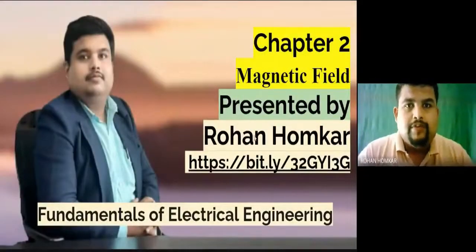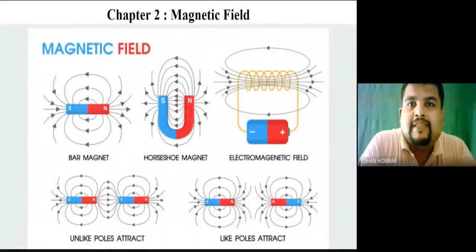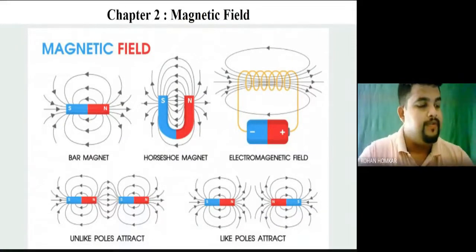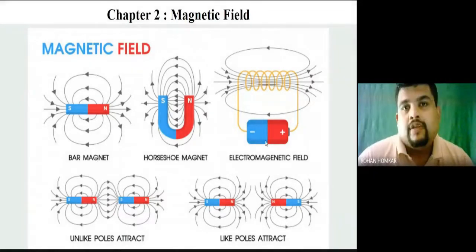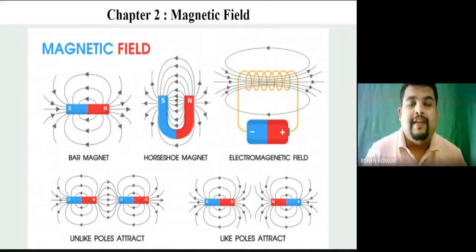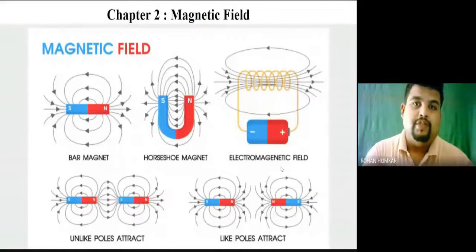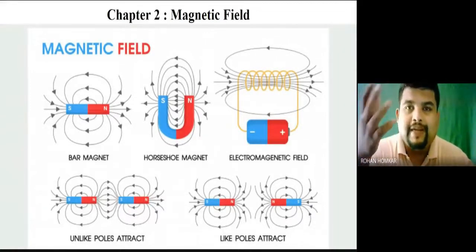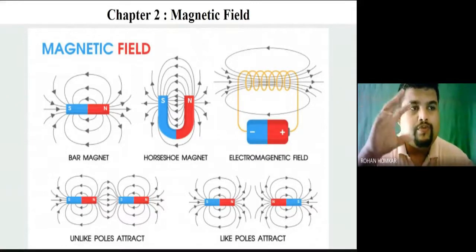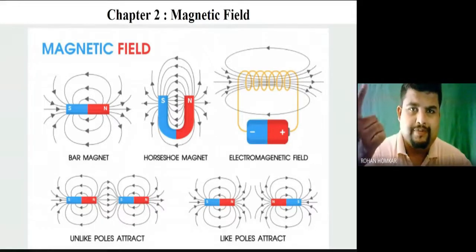Today we are going to start with Chapter 2: Magnetic Field. Same as we have studied about magnets in our earlier school days, we have different types of magnets like a bar magnet, a horseshoe magnet, and the next type which we can have control over is called an electromagnet. Electromagnets are used very widely in electrical engineering.